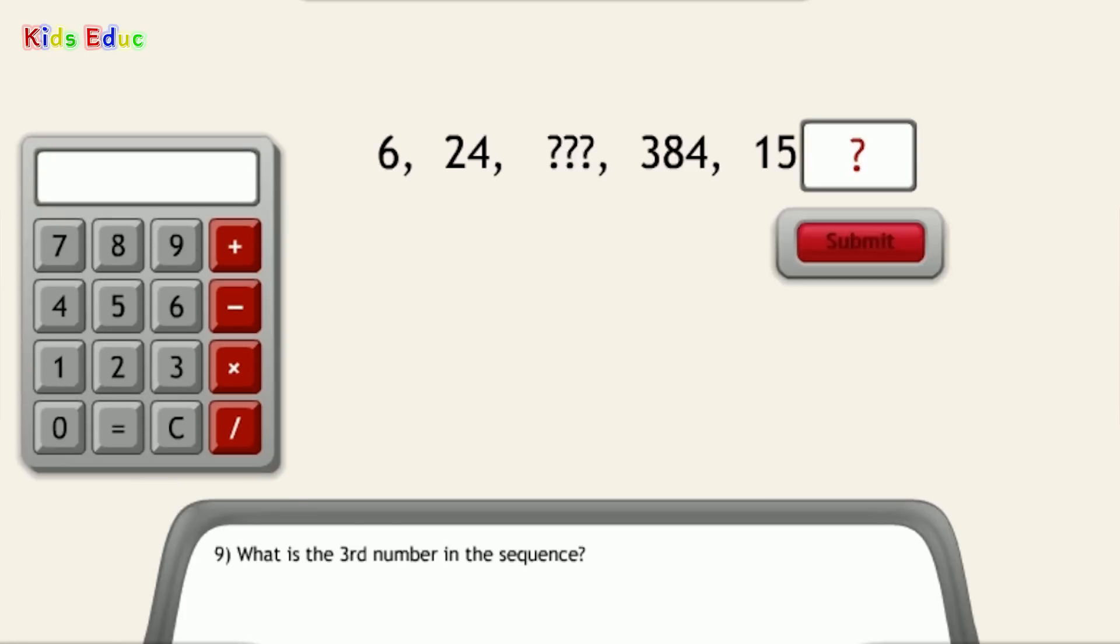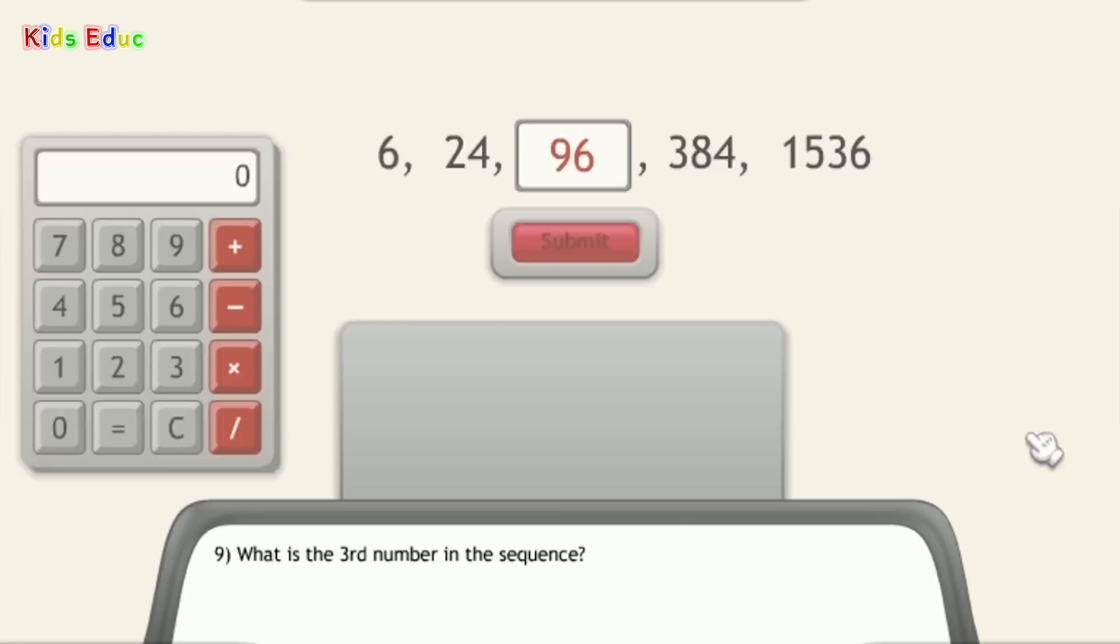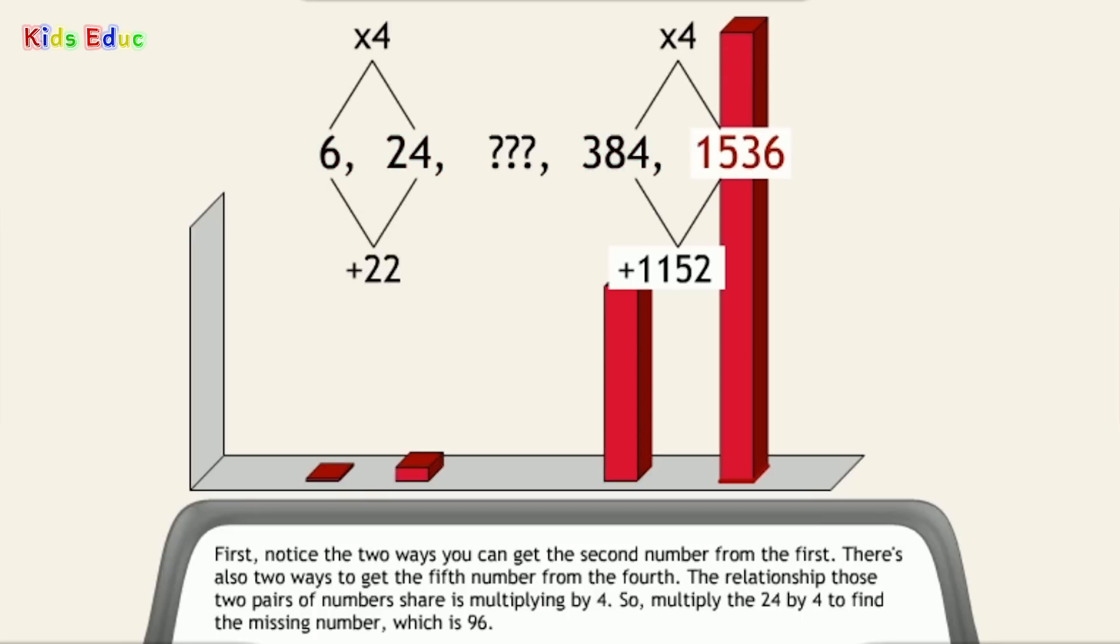Number 9. What is the third number in the sequence? 96. That's right. First, notice the two ways you can get the second number from the first. There's also two ways to get the fifth number from the fourth. The relationship those two pairs of numbers share is multiplying by 4. So, multiply the 24 by 4 to find the missing number, which is 96.